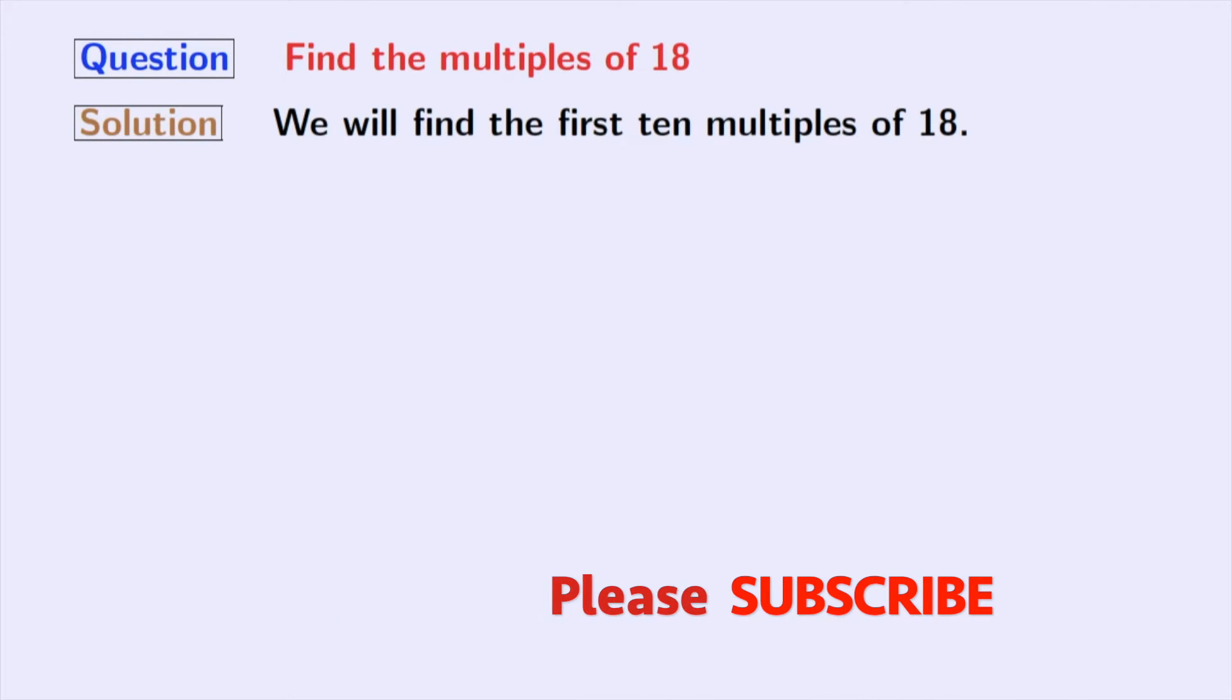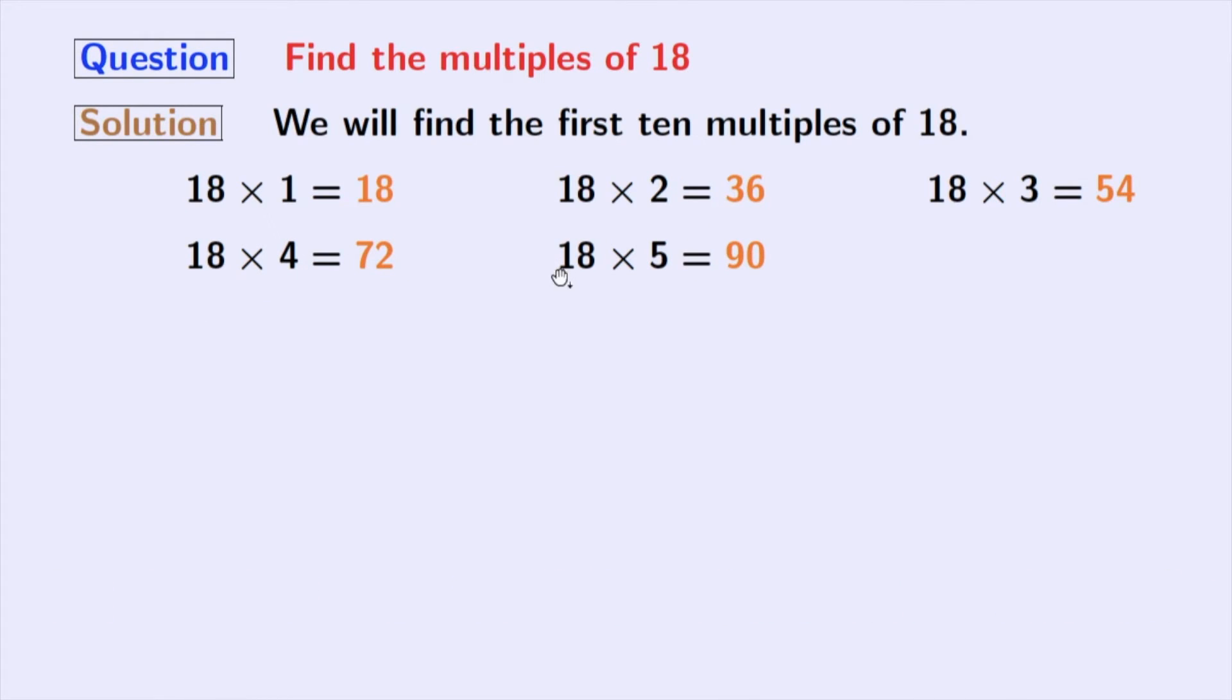Let's start to multiply with 1. Multiplying 18 with 1, we get 18. Multiplying 18 with 2, we get 36. Multiplying 18 with 3, we get 54. Multiplication of 18 and 4 gives us 72. Multiplication of 18 and 5 gives us 90.